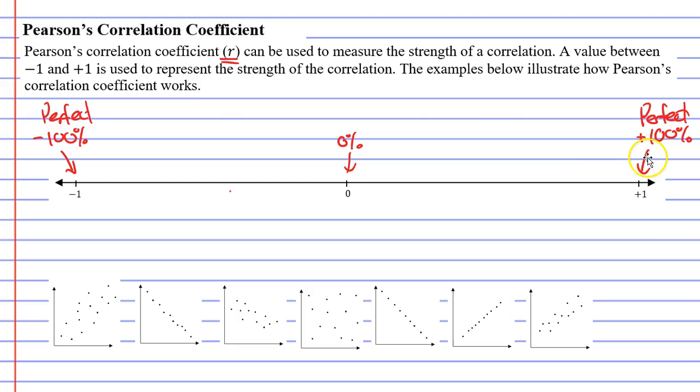If you get a score of plus 1, which is similar to plus 100%, it means it's going to be a perfect correlation. The plus means it's going to be a perfect positive correlation, and we have an example of one down here. It's perfect because every single point lies on the line of best fit. It's also positive because it's going uphill, so we give this a score of plus 1, meaning we've got a perfect correlation here.